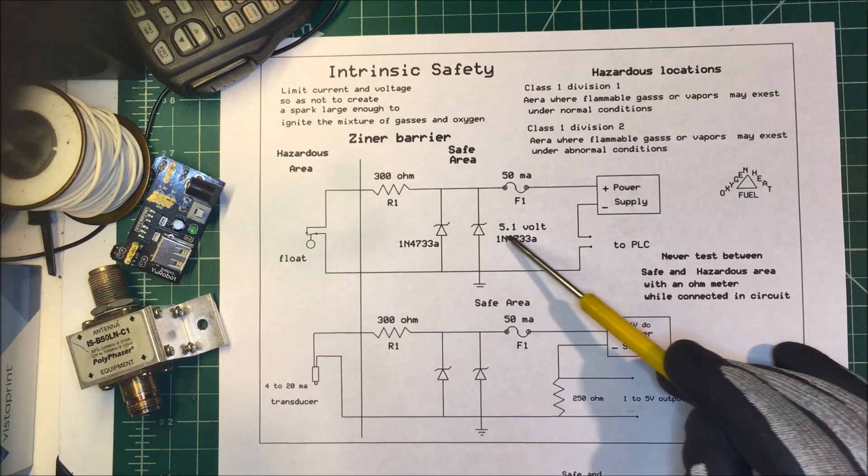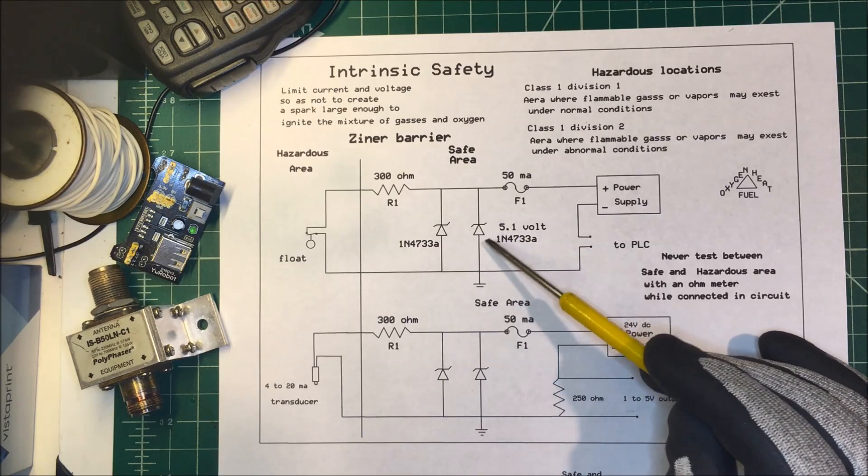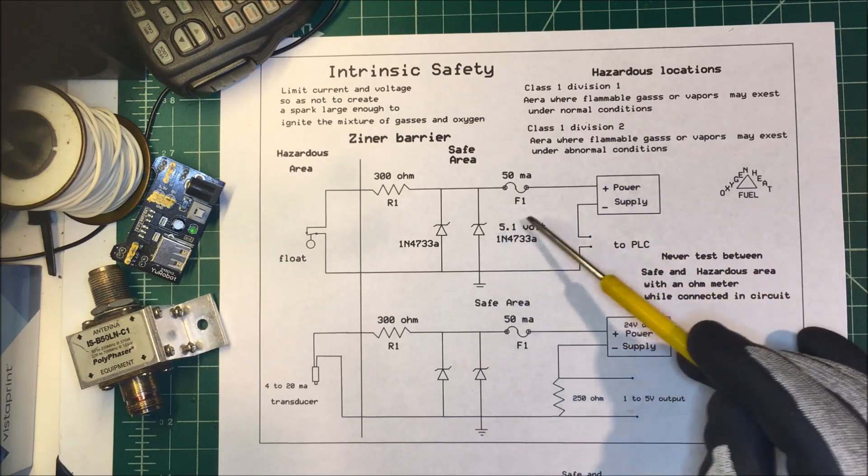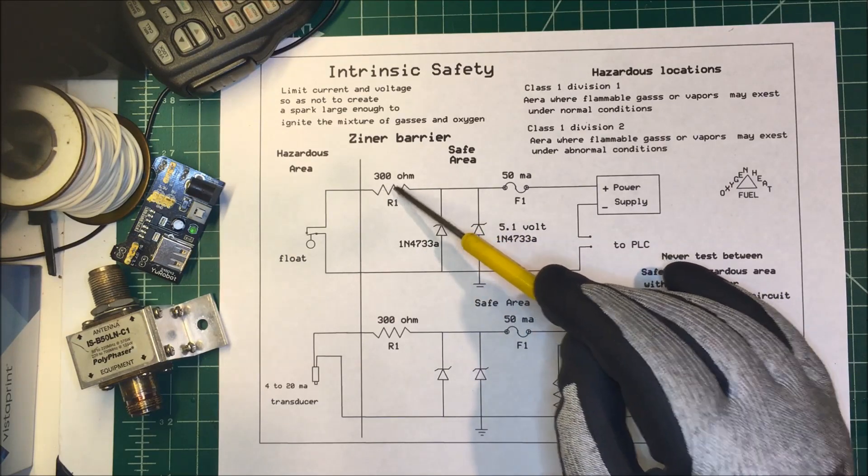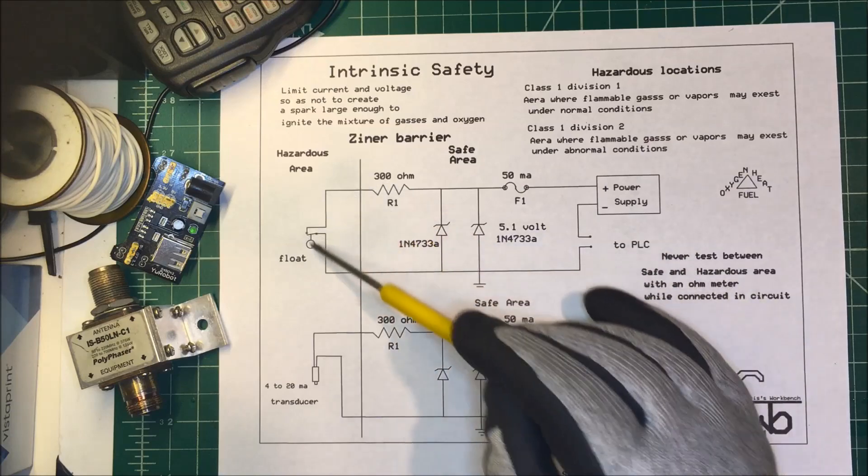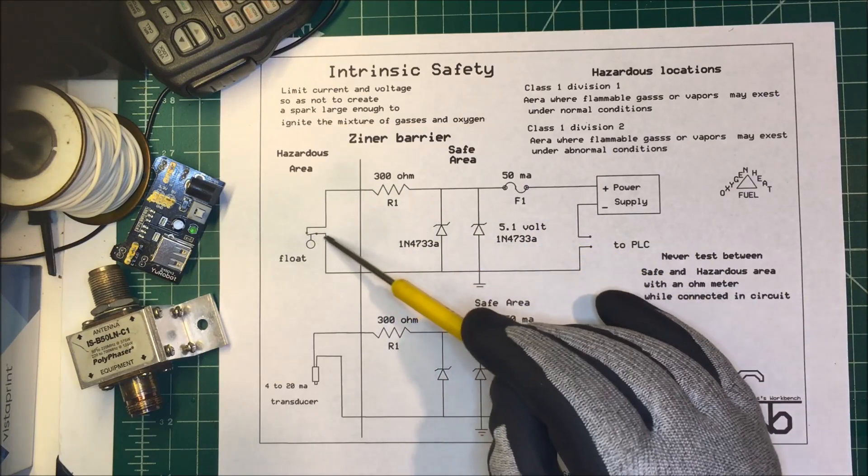Now in this case we're using 5.1 volt Zeners, so the voltage can't exceed 5 volts. And we're using a 300 ohm resistor to limit the current. What we're using here is just a float switch.